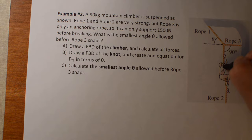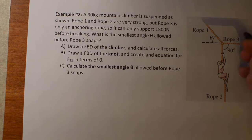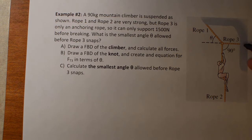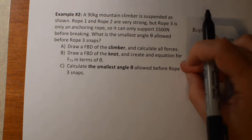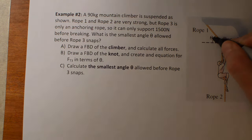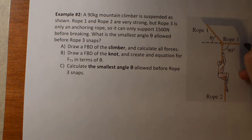Rope one and two are both really strong, so those are not going to snap no matter what. Rope three, though, could only support 1500 newtons before it breaks. So rope three is not essential to her survival — if it snaps, she'll just swing out. What we're going to try and find is the minimum angle theta allowed before there's too much tension on rope three and it breaks.